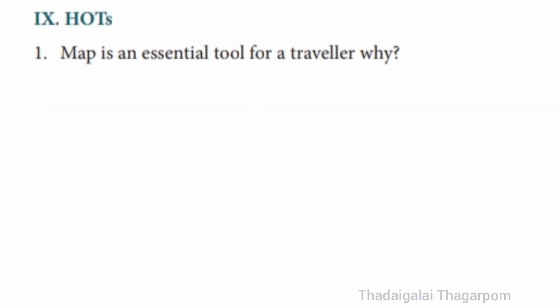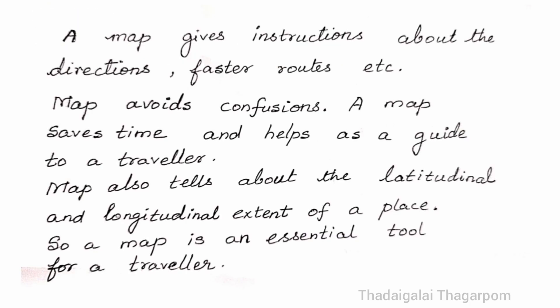Roman No. 9: Higher-order questions. Question 1 – Map is an essential tool for a traveler. Why? A map gives instructions about the directions and faster routes. Map avoids confusion. A map saves time and helps as a guide to a traveler. A map also tells about the latitudinal and longitudinal extent of a place. So a map is an essential tool for a traveler.